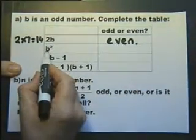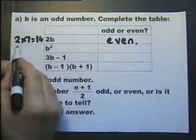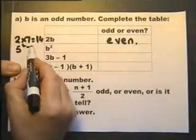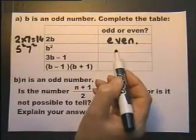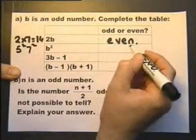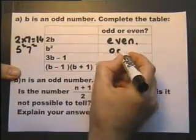Now what about B squared? If you square an odd number, 5 squared is 25, 7 squared is 49, 13 squared is 169. If you square an odd number, you get an odd number.